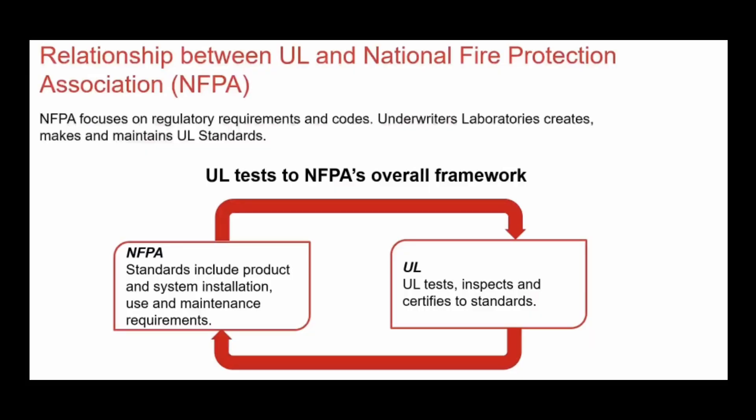You need to understand the main difference between NFPA and UL. NFPA has lots of standards that include products, system installation, use and maintenance requirements, and mainly focuses on regulatory requirements and codes. But UL mainly focuses on products, construction, and performance requirements for certification — UL tests, inspects, and certifies based on its standards.